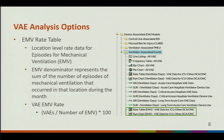The next report available for VAE analysis is the EMV, or episodes of mechanical ventilation, rate tables. The EMV rate tables are similar to the VAE regular ventilator rate tables in that they provide unit level data for EMV. The EMV denominator represents the sum of the number of episodes of mechanical ventilation that occurred in that location for the month. The calculation is the number of VAEs divided by the number of EMVs, multiplied by 100.